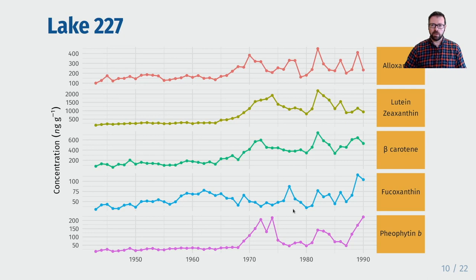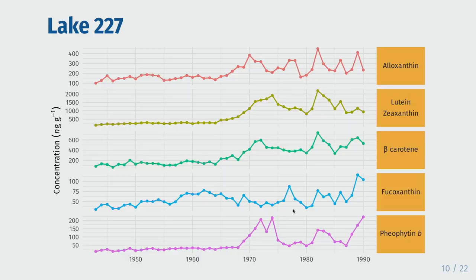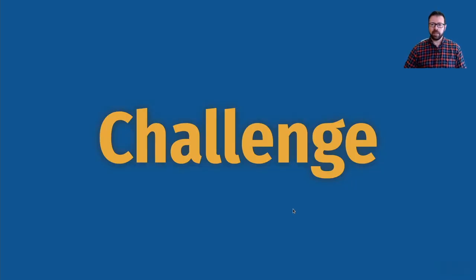Today I will focus only on the main algal groups: diatoms and chrysophytes through the pigment fucoxanthin, chrysophytes through alloxanthin, cyanobacteria and chlorophytes through lutein-zeaxanthin and pheophytin b, and total algae through beta-carotene. The challenge here is to estimate how the mean and the variance of the pigment community has changed continuously throughout the experimental manipulation.